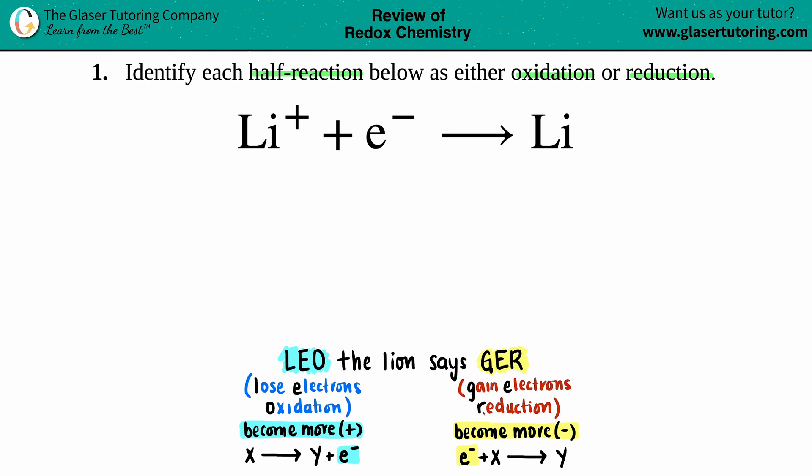Whenever you're losing electrons, you're always going to become more positive because electrons are negative. So if you lose something that's negative, you're becoming positive. On the flip side, if you're gaining something that's negative, you're gaining electrons, you're going to become more negative.